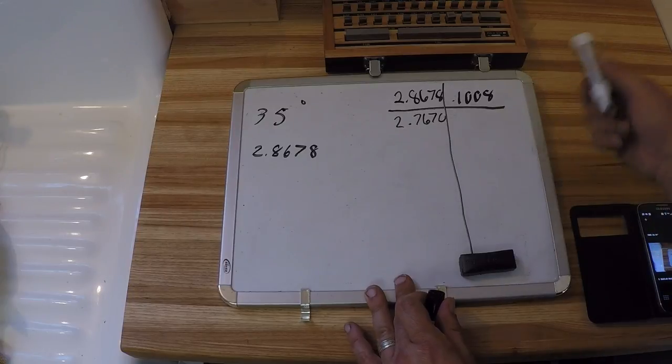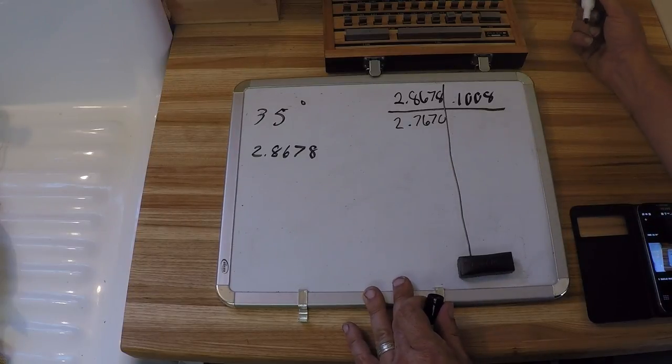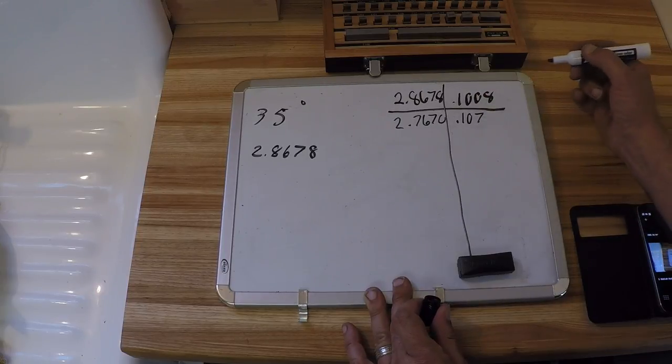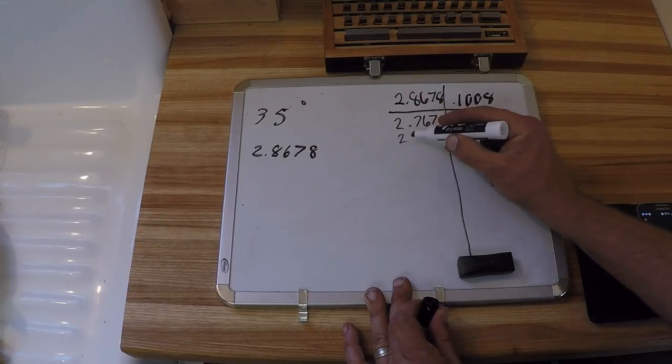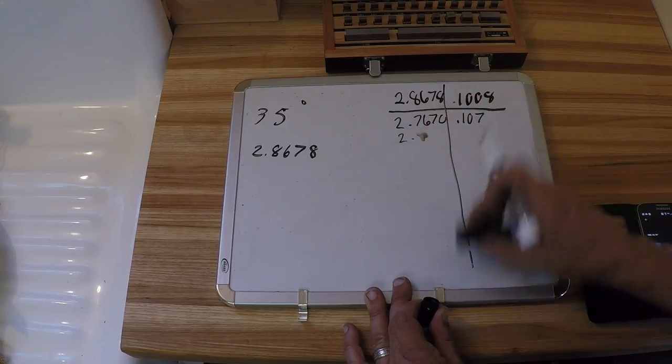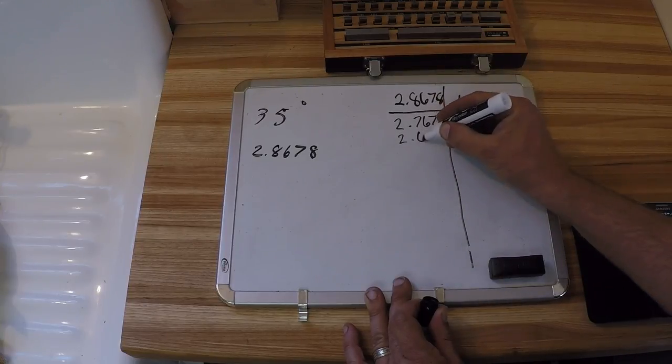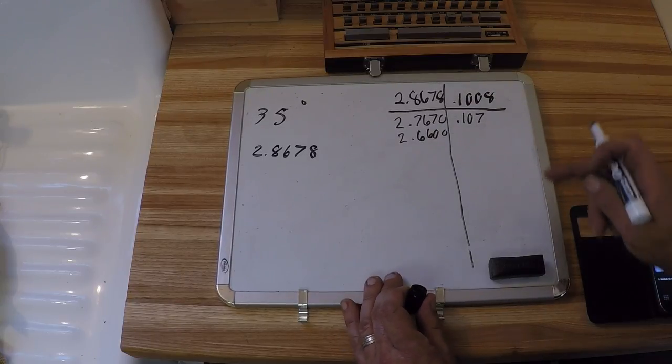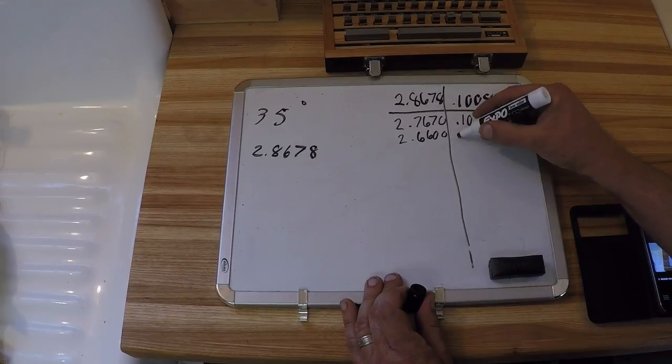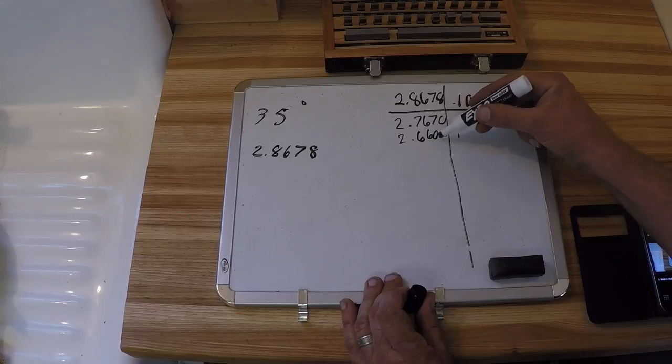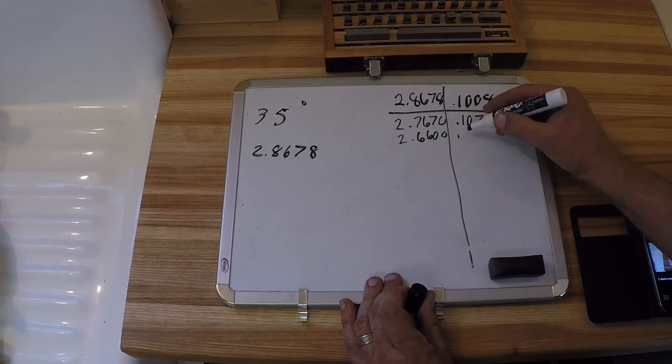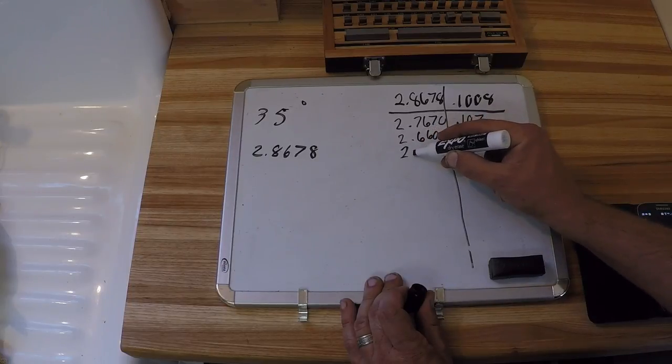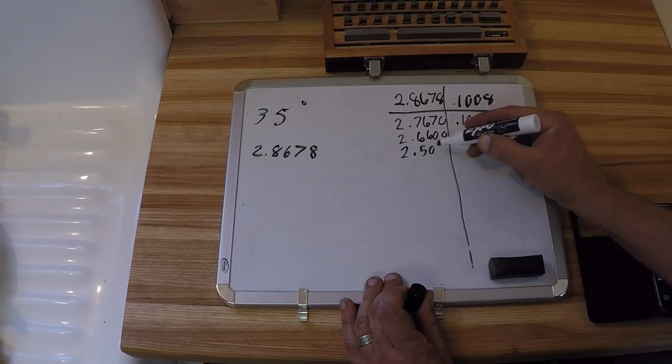The next thing we need to do is deal with this 7 thousandths. The only block I have that will do that is 107 thousandths. So we subtract that from here. That leaves us 0.66. Next we need to get rid of the 60 thousandths here. I have a block that is 160 thousandths. So that's pretty easy. That leaves us 0.25.